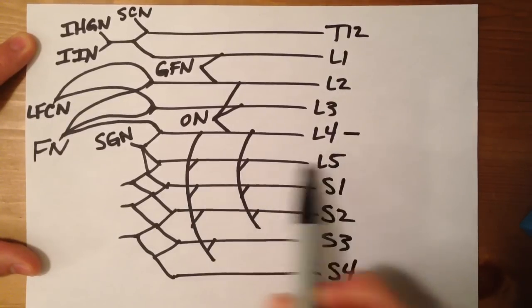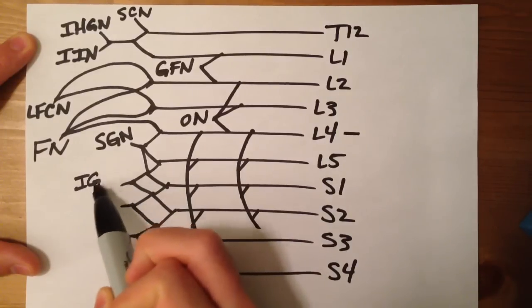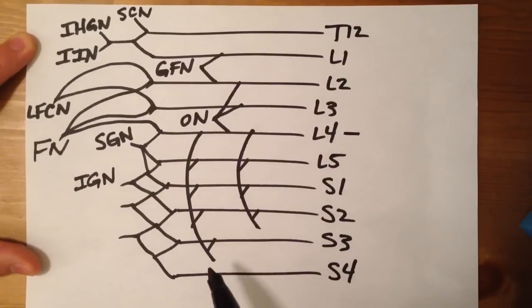Between L5 and S2, that's going to be your inferior gluteal nerve.